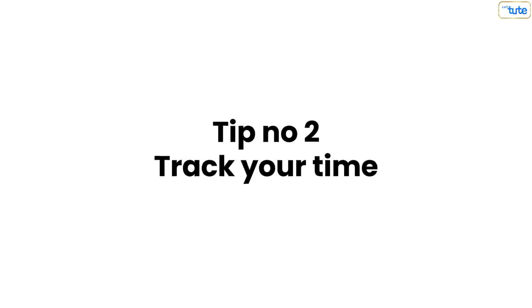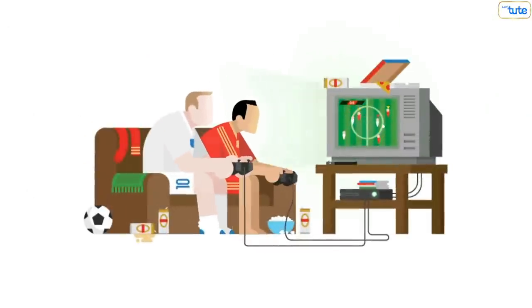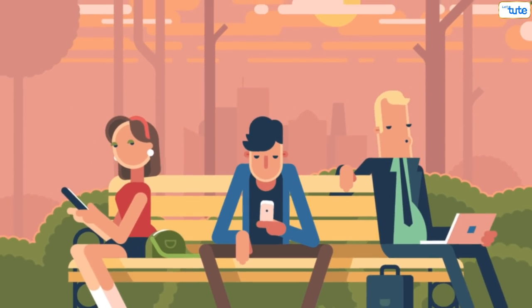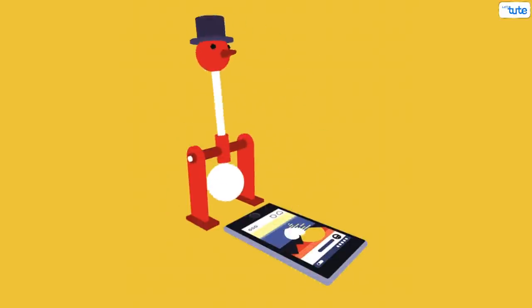Tip number 2: Track your time. Most of the students are good at wasting time because they lose track of time while doing activities. So, take a paper and write down all the activities that you do in a day and think of how much time you are wasting while doing a single activity.